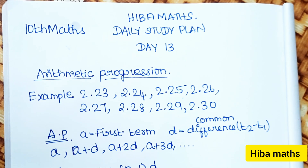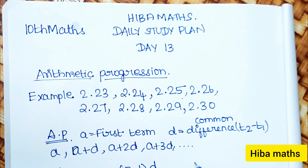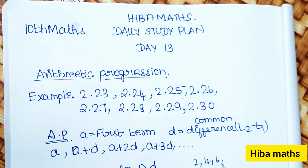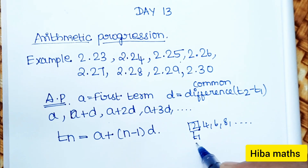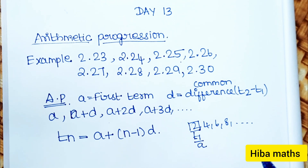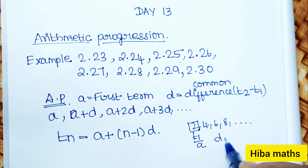In 2.5, we start Arithmetic Progression. The first formula uses the first term 'a' and 'd' as the common difference. For example, the sequence 2, 4, 6, 8 — t1, t2, t3, t4 — so t1 is 'a'. The common difference d is equal to t2 minus t1.